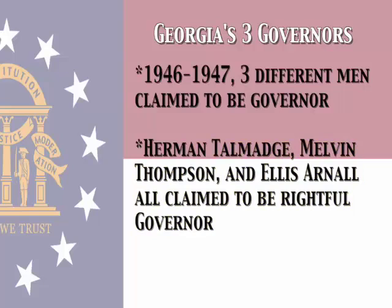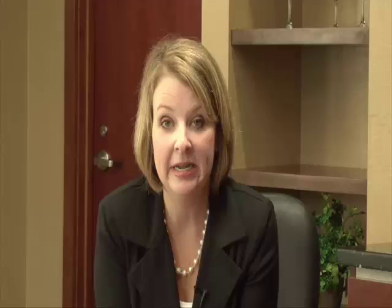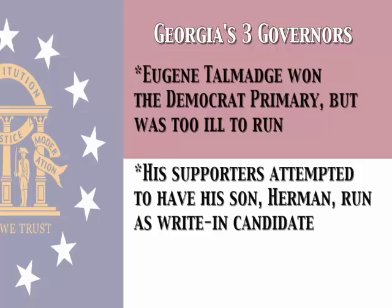The final thing of interest in the state of Georgia that's kind of unique is that at one point Georgia had three governors. In 1946 to 1947 we had an interesting situation where at one time three individuals claimed to be governor of the state of Georgia. It all starts with Eugene Talmadge who won the Democratic primary, and at this time the state was so heavily Democratic that elections were essentially determined in the primary.